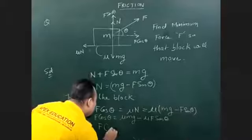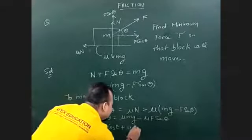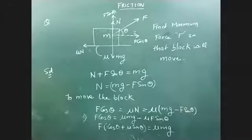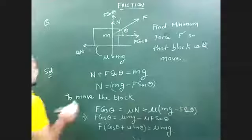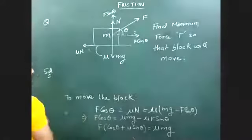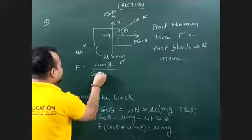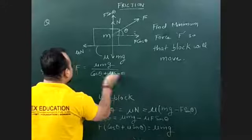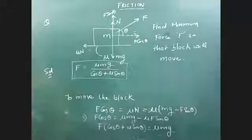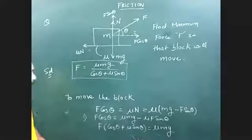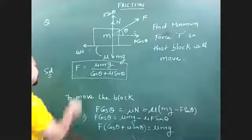So here: F cosθ plus mu F sinθ equals mu mg. Taking F common: F times (cosθ plus mu sinθ) equals mu mg. Therefore F equals mu mg divided by (cosθ plus mu sinθ). This is the expression for force at angle θ.